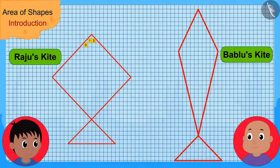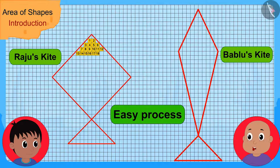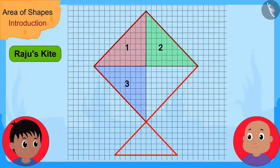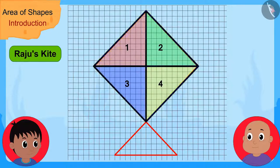Raju immediately began to count the number of squares inside the outlines of the kites. Bablu stopped him saying, "Hey Raju, wait. I have an easy process to find the area of shapes. I will show you." Bablu first made a triangle inside the outline of Raju's kite.